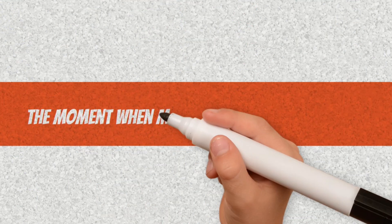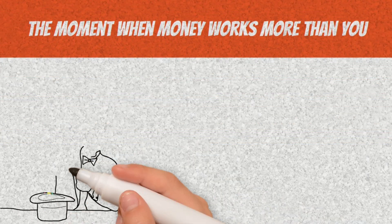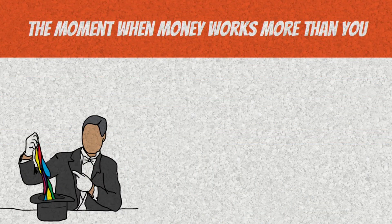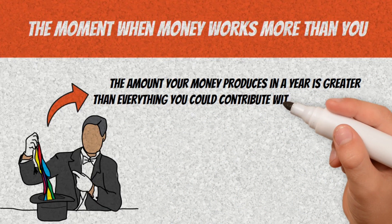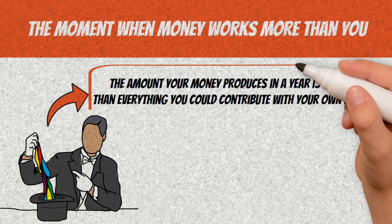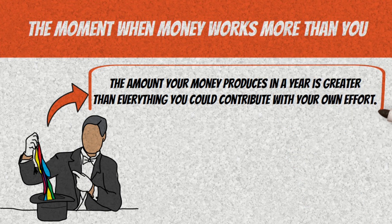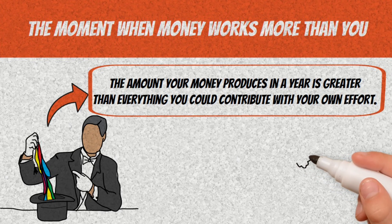The moment when money works more than you. There's a point in the financial journey when something magical happens. The amount your money produces in a year is greater than everything you could contribute with your own effort. This is the true climax of the 8-4-3 rule, the moment when capital takes center stage and you become a spectator of your own growth.